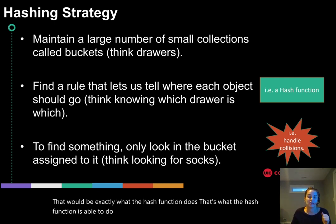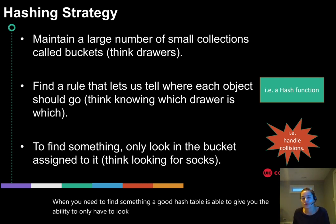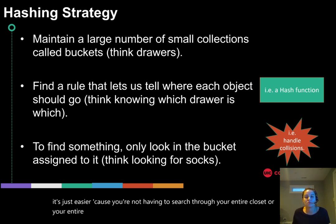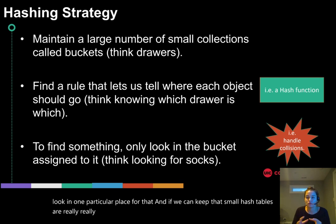And then when you need to find something, a good hash table is able to give you the ability to only have to look into one of the buckets, one of the drawers. And so it's just easier because you're not having to search through your entire closet or your entire room with all your clothes in different spots. But you only have to look in one particular place for that. And if we can keep that small, hash tables are really, really efficient. Keep that drawer small.